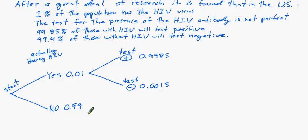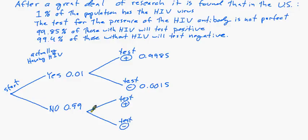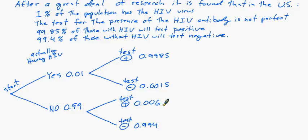And of course, down here we have two branches — test positive and test negative. Of those who don't have the virus, some will test positive; these are the false positives. But most will test negative — that's our 99.4% chance. And so this would be the rest of it, which would be 0.006% chance.